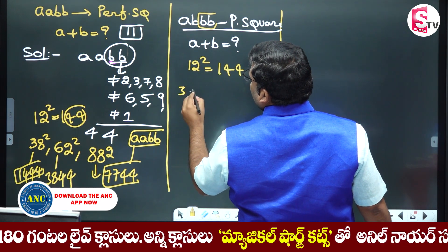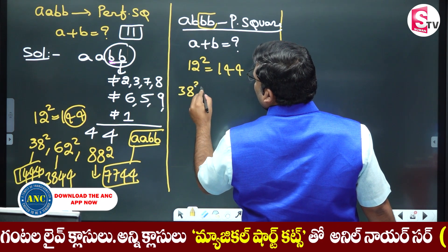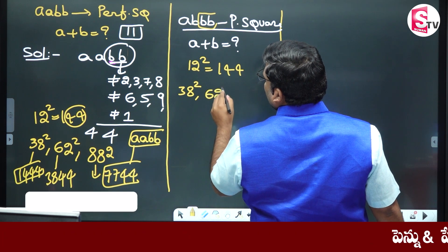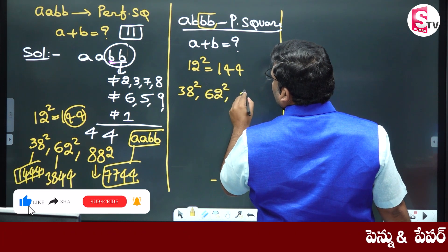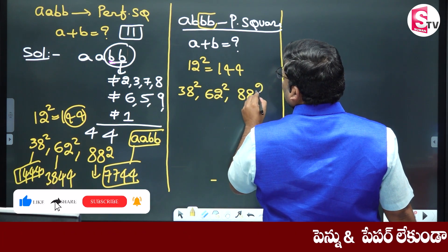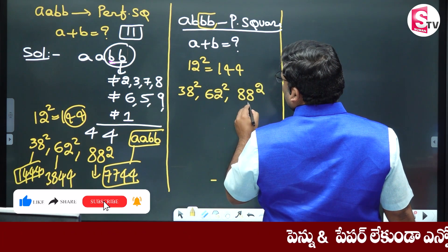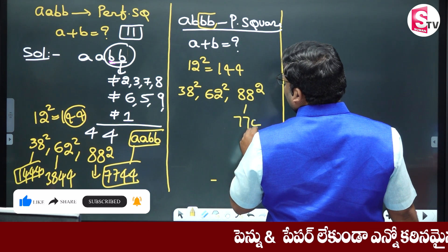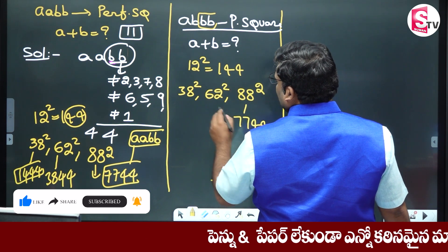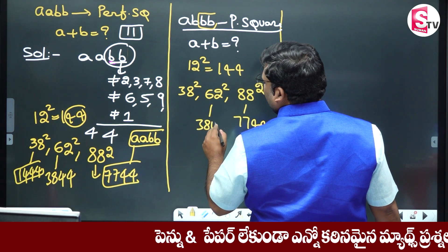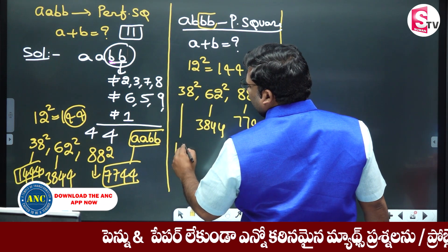9 by minus 18, 10 by plus 18, 10 by minus 18, 1 by minus 18, 12 by minus 18. This gives 7744, this is 3844, and this is 1444.